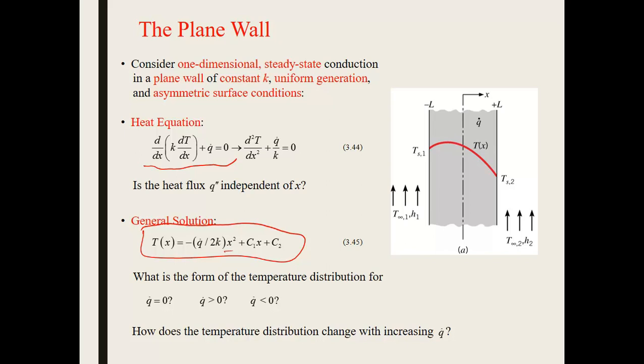What is the form of the temperature distribution when you have no generation, when you have generation greater than zero, or when you have generation less than zero? When generation is equal to zero, this goes away and you're left with just a linear profile. This basically reduces to the case of plane wall at steady state, constant thermal conductivity, and no generation, which we know develops a linear temperature profile.